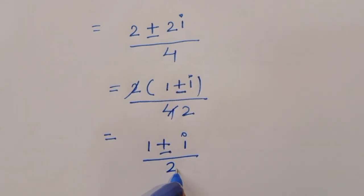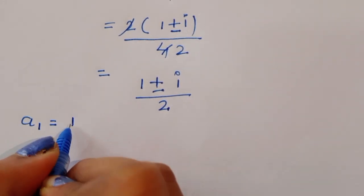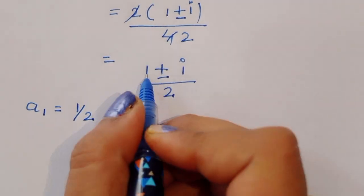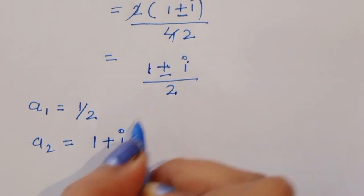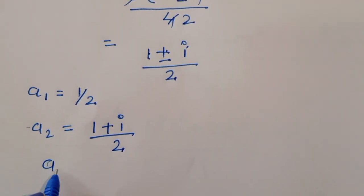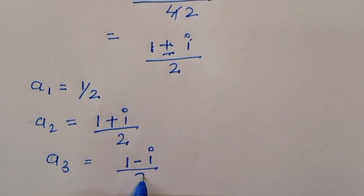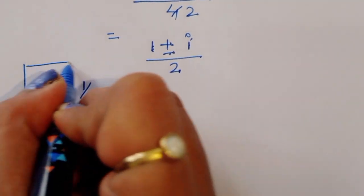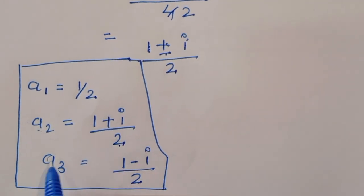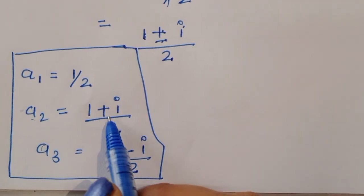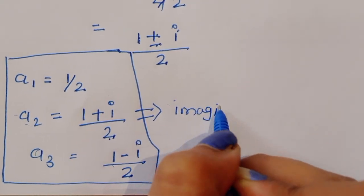So the values are: a1 equals 1/2, a2 equals (1 plus i) divided by 2, and a3 equals (1 minus i) divided by 2. This is the complete solution. Here a2 and a3 are imaginary solutions because i is present, so these are imaginary solutions.